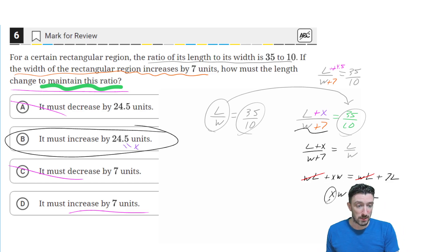And I've got xW equals 7L. But I'm really after x. So I need to divide by W, so I can just get x on its own. And the answer is 7L over W. Well, we said it's supposed to be 24.5. But we're seeing L over W pop up one more time.